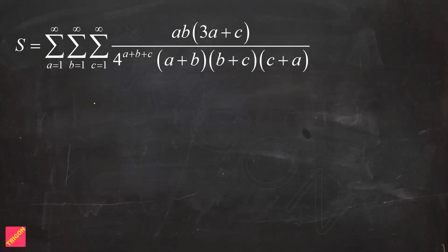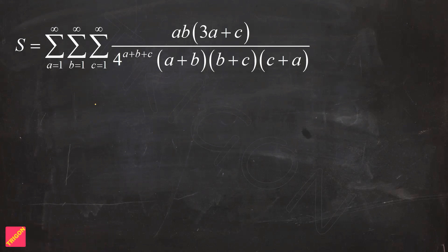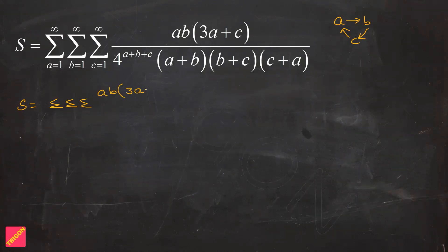In this question we are going to see how to solve this triple summation question. It may look very complicated, but if we make basic modifications it will become much easier. The first set of changes we'll be doing in the summation is: a will be changed to b, b will be changed to c,